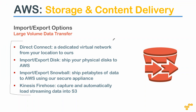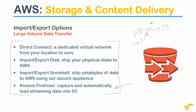Kinesis Firehose is for streaming data. Think of a Twitter feed or Facebook feed coming in continuously. You can connect your data source to Kinesis and pipe it to your S3 bucket - any streaming data coming from Twitter or Facebook feeds can be processed by Kinesis and stored in S3, EC2, or any other service. It is great for streaming data but not for other types.